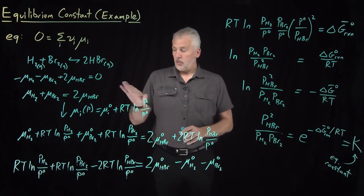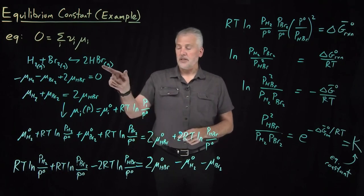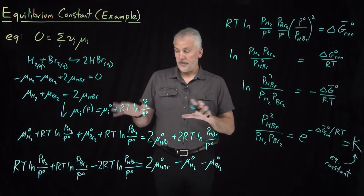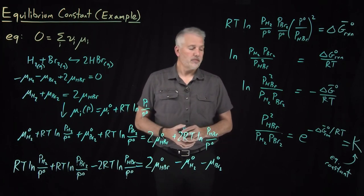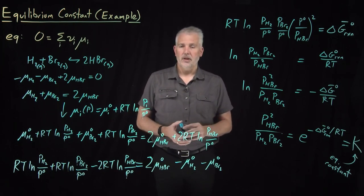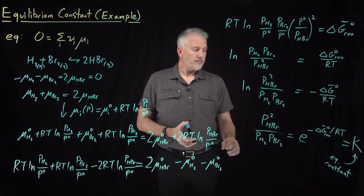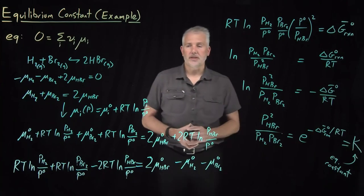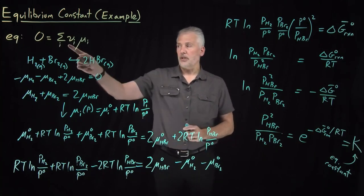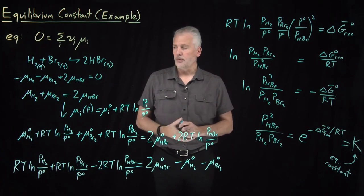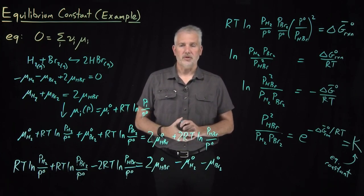We've done this with a fair amount of work for the specific case of H₂ and Br₂ forming HBr. Rather than repeat this for every new reaction, it will be more useful to do it once and for all for the general case — deriving the equilibrium condition in terms of an equilibrium constant for an arbitrary reaction with arbitrary stoichiometric coefficients. Having seen this example, we'll do the general case next.